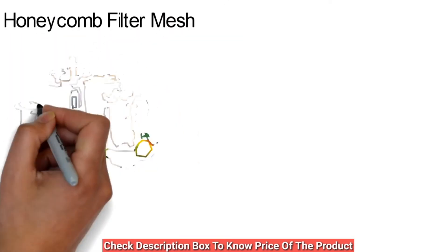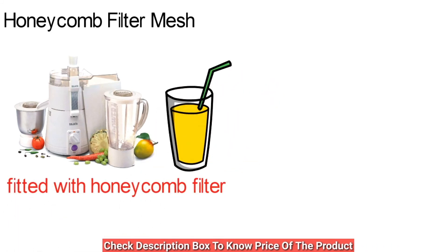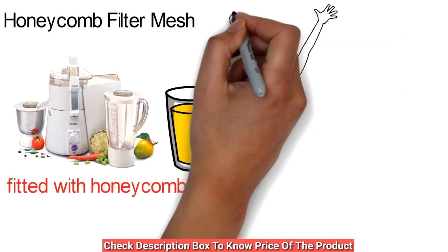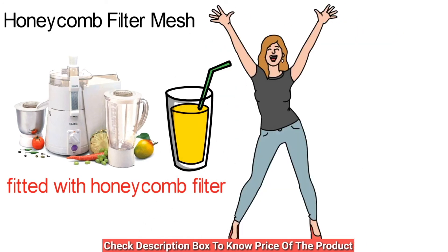Honeycomb filter mesh. Sujata Powermatic Plus is fitted with honeycomb filter that aids in giving you finer juice. Enjoy the best. This is the best juicer for veggies and fruits.